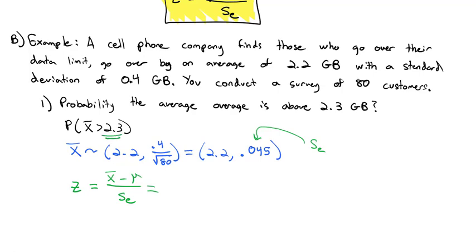Our x bar, we want to be greater than 2.3. So we'll take 2.3. We'll subtract the average of the population divided by our standard error. Because we have a sample, not an individual, of 0.045. And when we divide, we get 2.22.